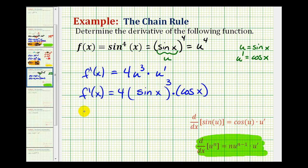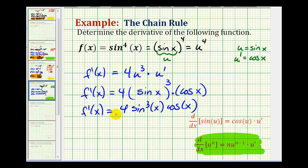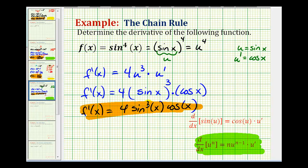Let's go ahead and write this one more time. We have f'(x) is equal to 4 sine to the third x, cosine x. We could express this derivative in a different form using the double angle identity for sine, but we're going to go ahead and leave it in this form for this example.